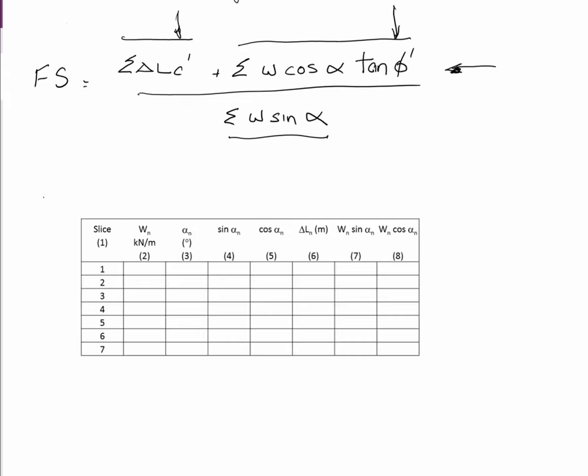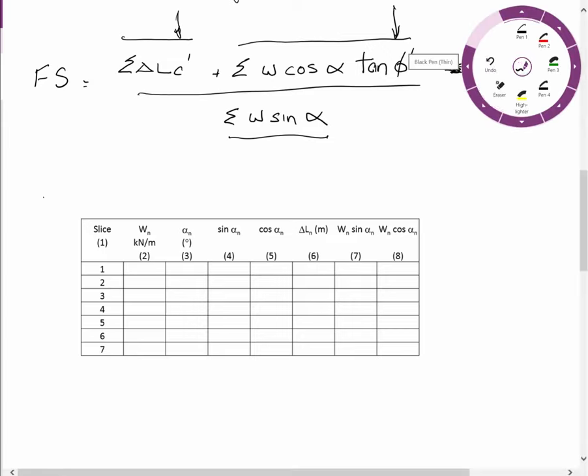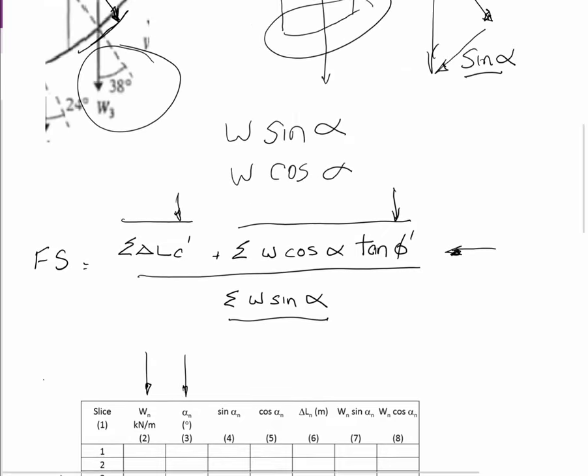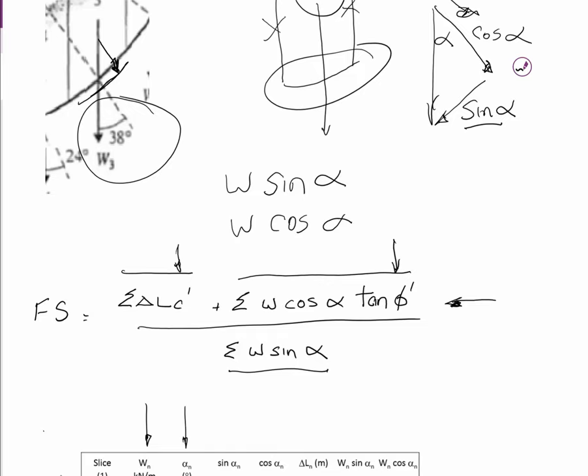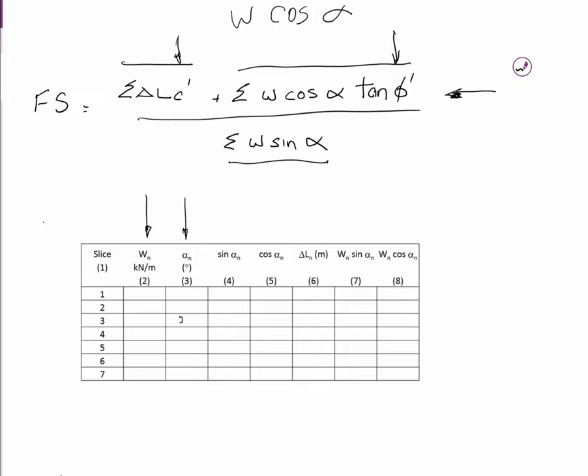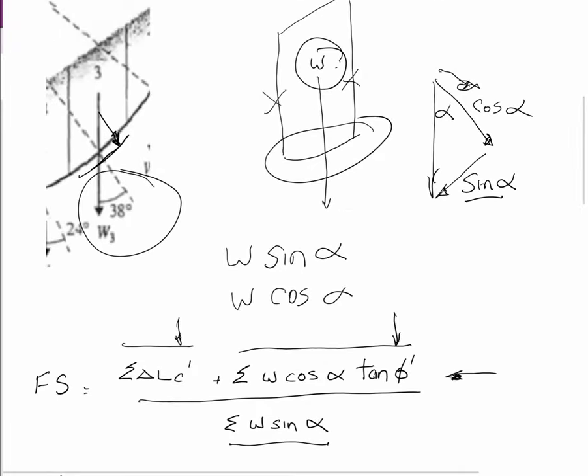Okay, so this is the table I was talking about. You draw something up like this, or if you're extremely lucky, it'd be given to you. And you go through and fill in what you know. The weights of each layer in an exam situation would probably be given to you. The alpha value for each slice, I've circled it up here, 38 degrees. For slice 3, so it would go in here, 38. And the delta L's, the length of the arc of each one.